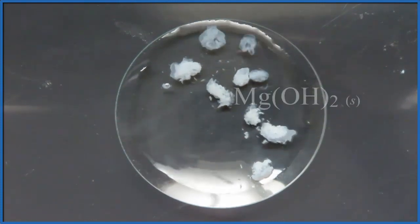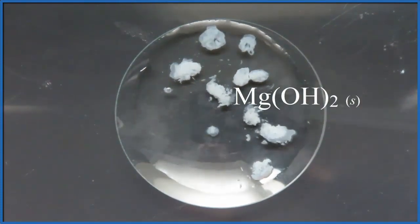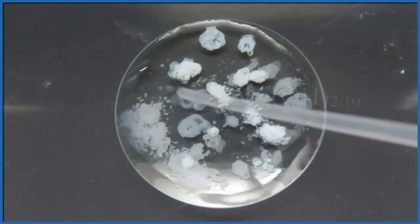That blossom is the precipitate, magnesium hydroxide. Let's go back and check on that beaker, see what's happening there.